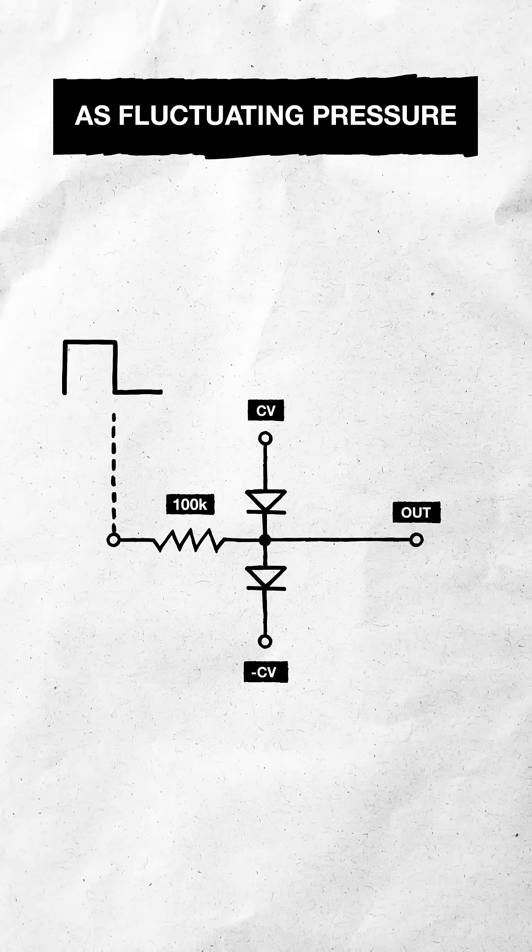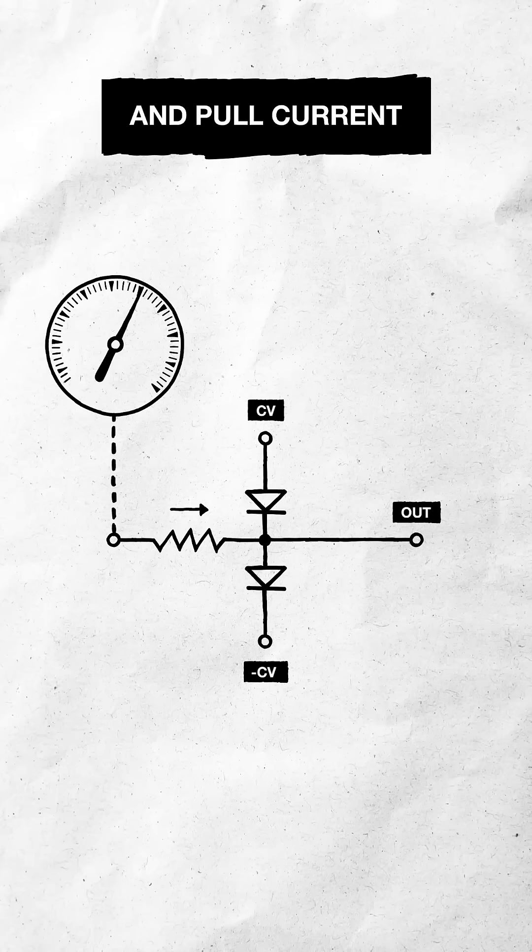Think of the input voltage as fluctuating pressure, trying to push and pull current through the resistor.